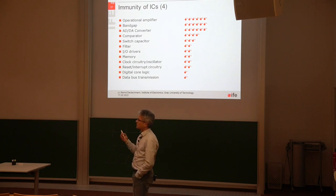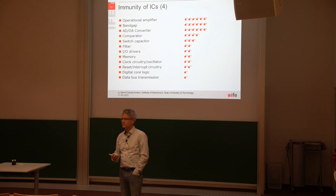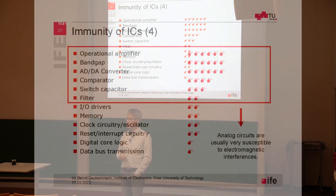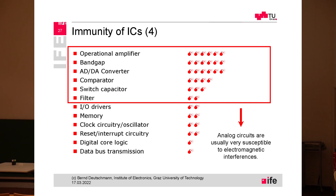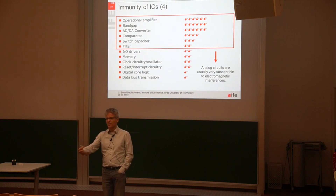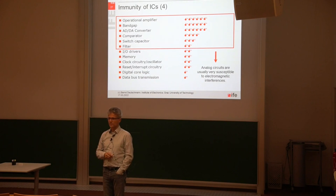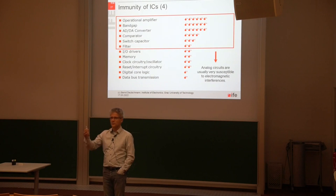What are the victims inside of the IC that can react to this kind of interference? It's mainly the analog parts — very often operational amplifiers, band gaps, analog-to-digital, and digital-to-analog converters. For the digital part, you need quite a lot of RF energy to change the state of a memory or a transistor. But you do not need that much energy to change the output signal of an operational amplifier.